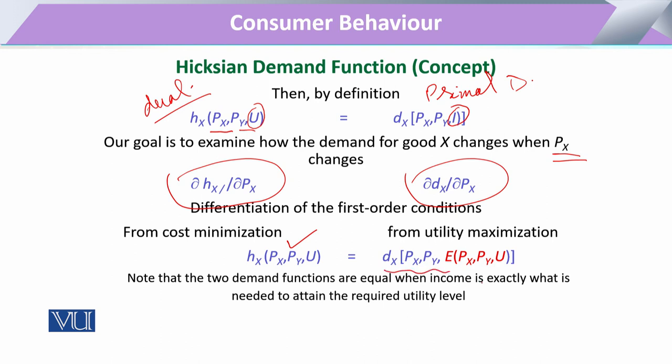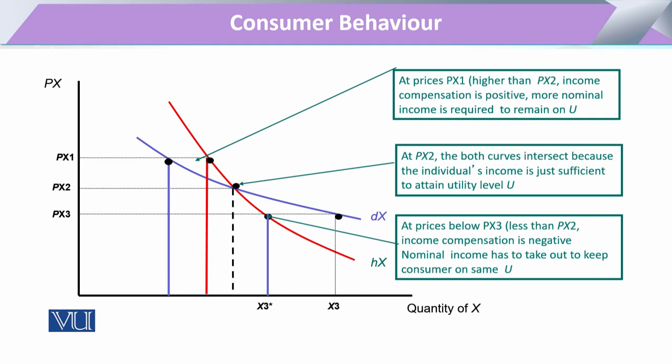In the Marshallian we substitute the income with the expenditure term. These two demand functions become equal in the sense that this tells us the amount of income or expenditure that is required when the consumer maintains their existing utility level. When we draw this in the form of a curve, the Marshallian or ordinary demand curve is our general curve, with a center point where the consumer is at equilibrium.